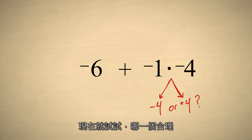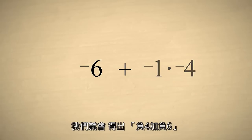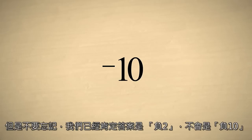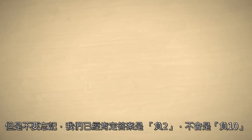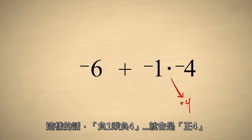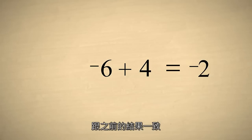Let's try both possibilities and see which one gives us the correct answer. If we assume that multiplying two negative numbers results in a negative product, then we end up adding negative 4 to negative 6, which equals negative 10. But the answer should be negative 2, so this is not correct. The other possibility is that multiplying two negative numbers gives a positive result. In that case, negative 1 times negative 4 would be positive 4. We then add positive 4 to negative 6, which gives us negative 2 — the correct answer.